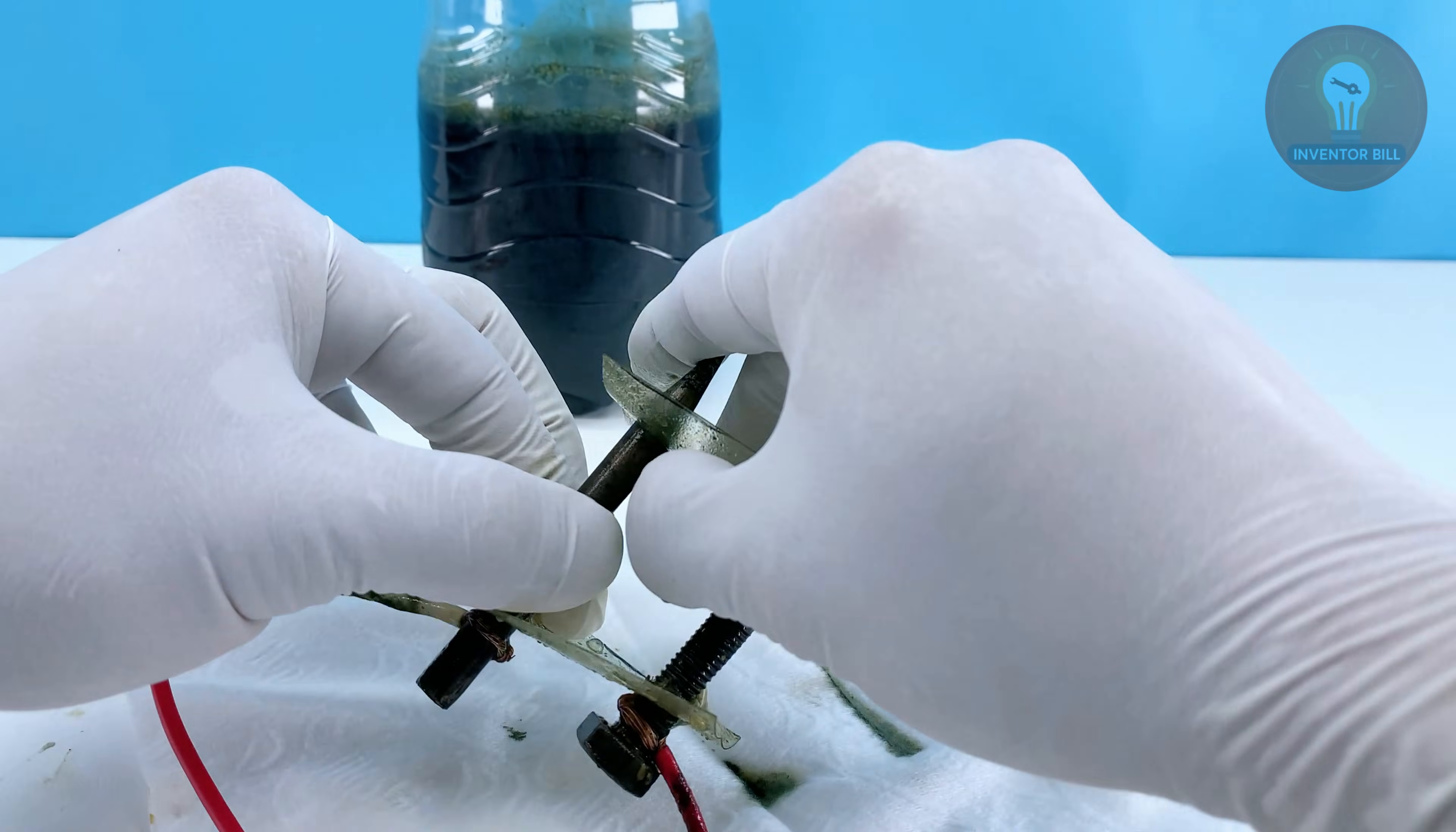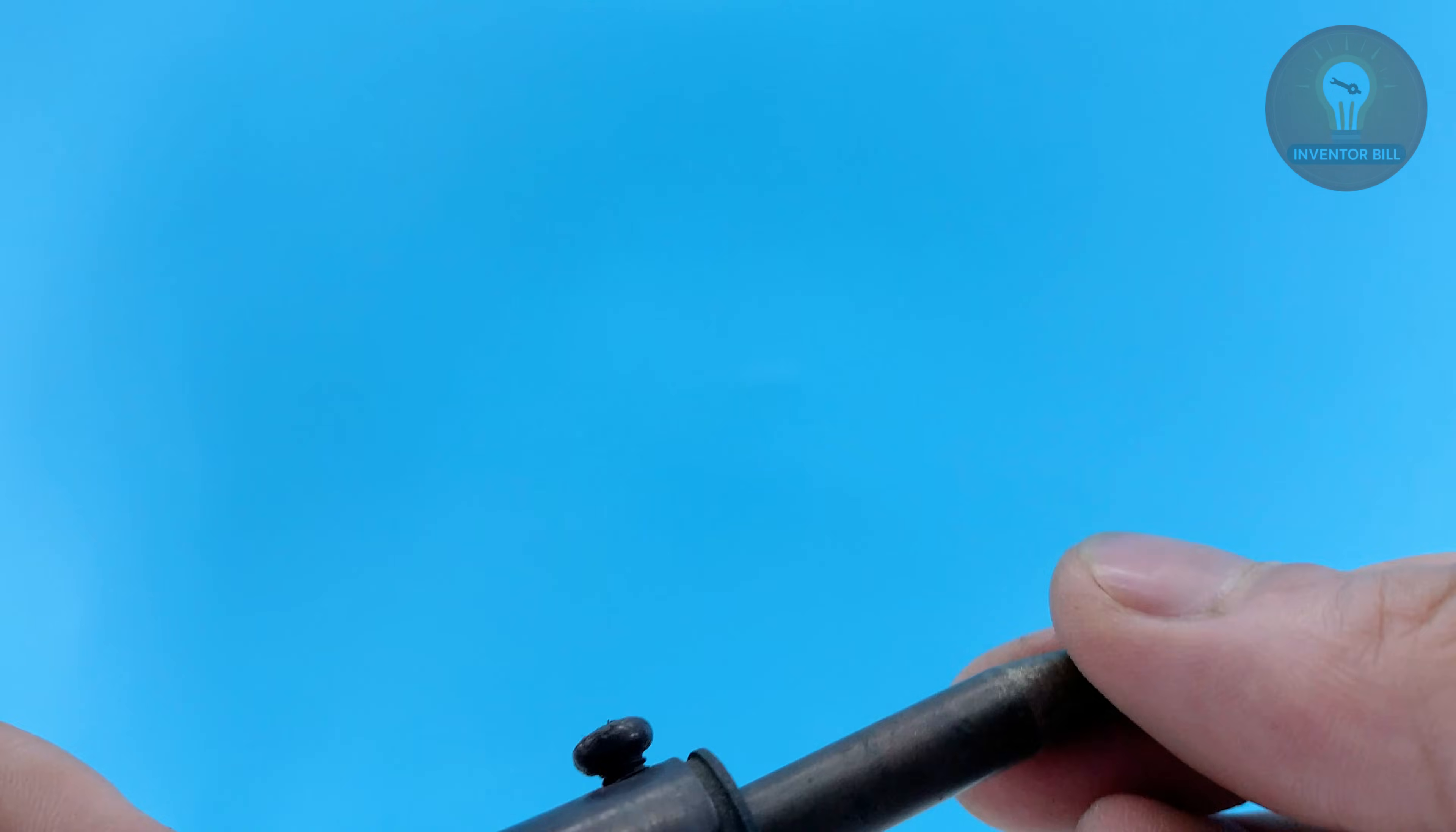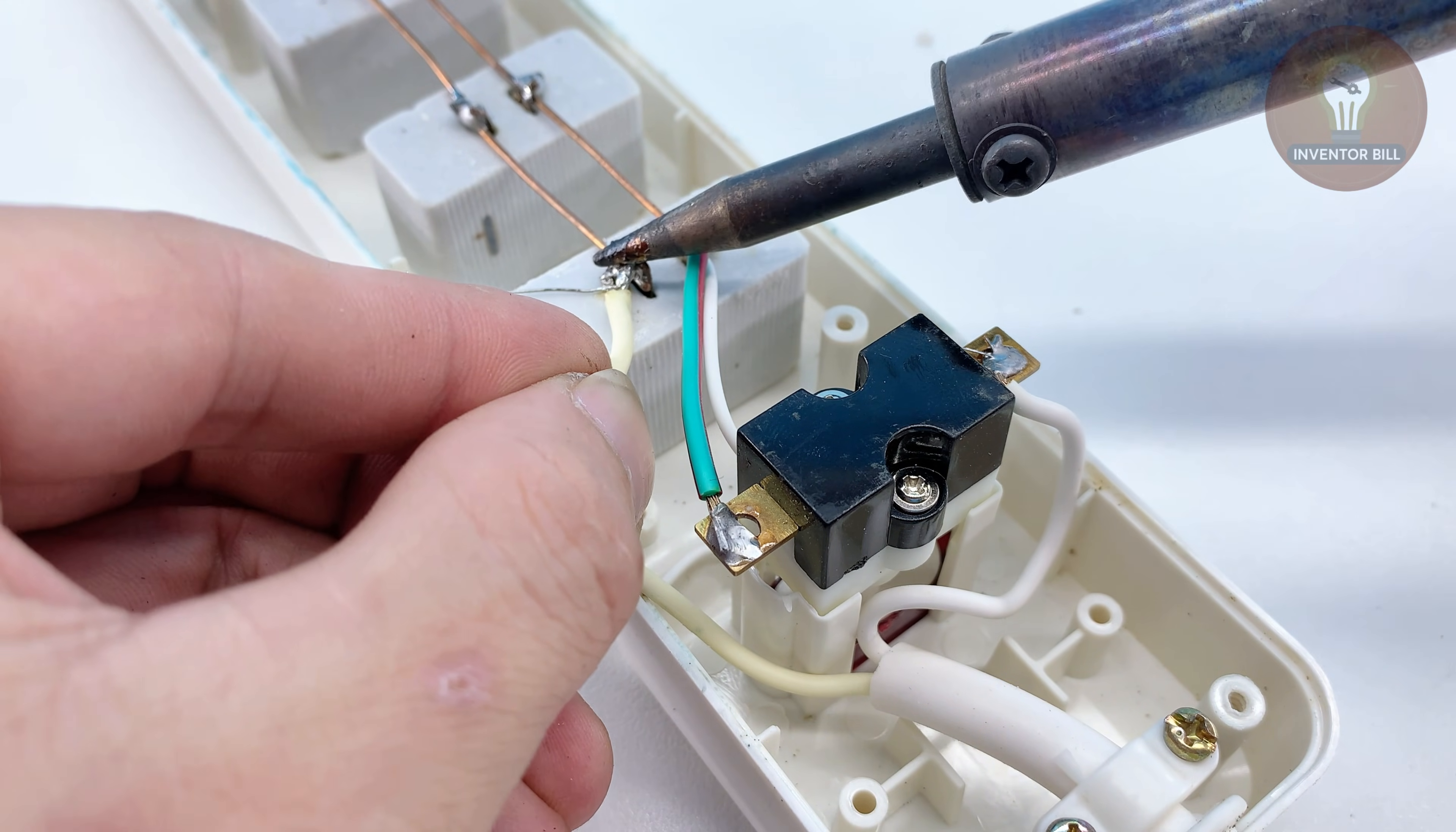Now it's time to see how well this cleaning method worked. Take the soldering tip out of the salt water and dry it carefully with a clean cloth or tissue. You'll see that the surface looks brighter and smoother than before. Reassemble your soldering iron, plug it in, and let it heat up for a minute or two. To test it, grab that loose wire from the power strip you were trying to fix earlier. Touch the soldering tip to the wire and apply a small bit of solder. You should notice right away how smoothly it melts and sticks.